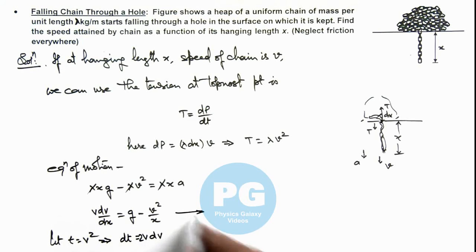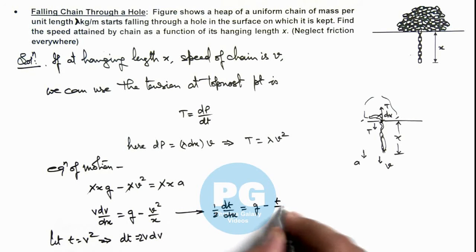...v dv equals half dt/dx equals g minus t/x, considering v squared as t.